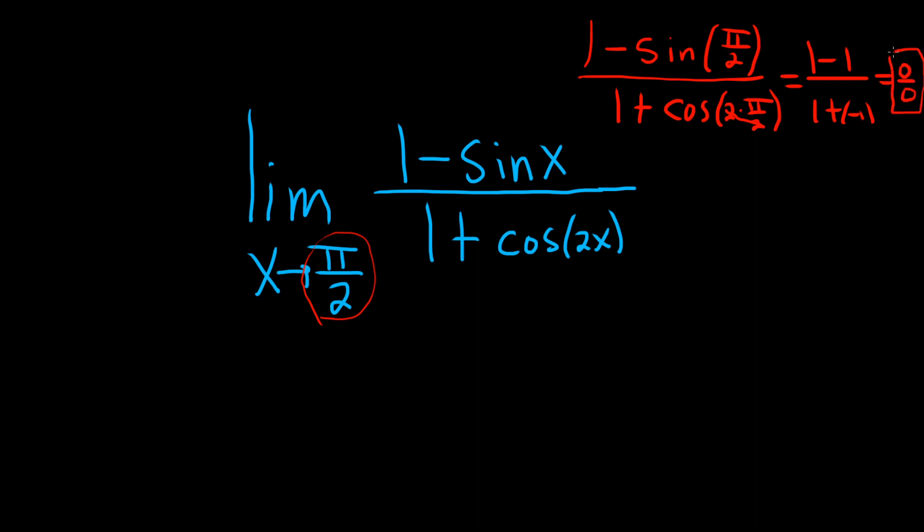So whenever you end up with 0 over 0, this is called an indeterminate form. And whenever you have this one or infinity over infinity, you can use something called L'Hopital's Rule. So L'Hopital's Rule says that you can just take the derivative of each piece - the derivative of the top and the derivative of the bottom. So let's go ahead and do that.